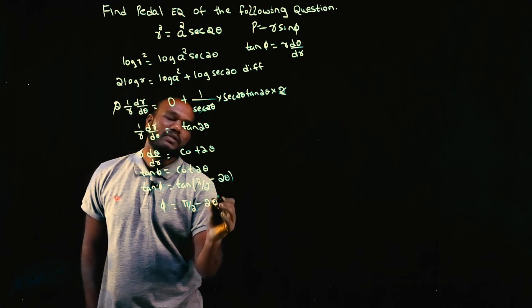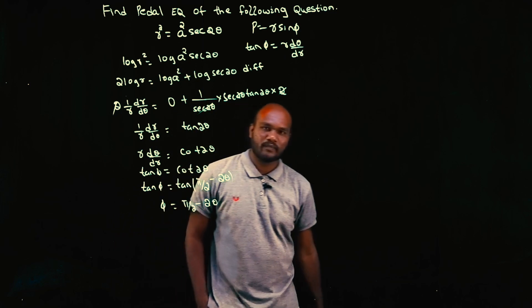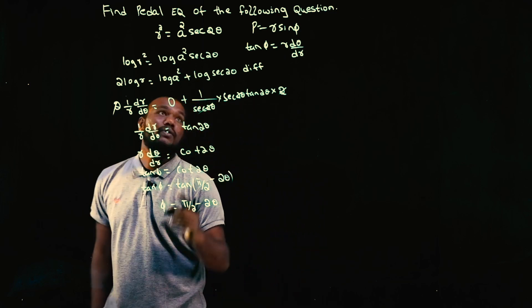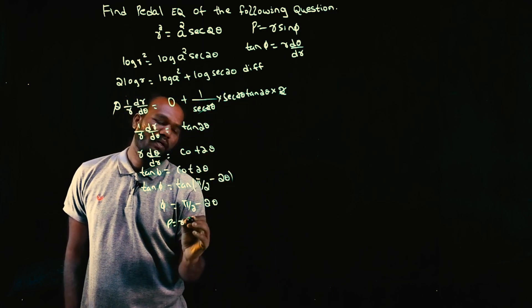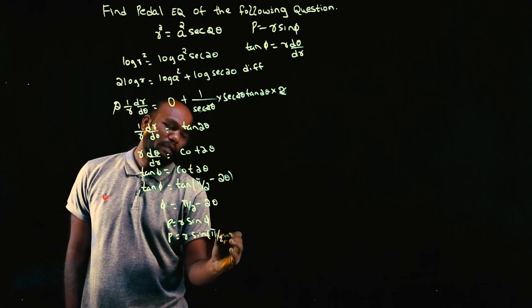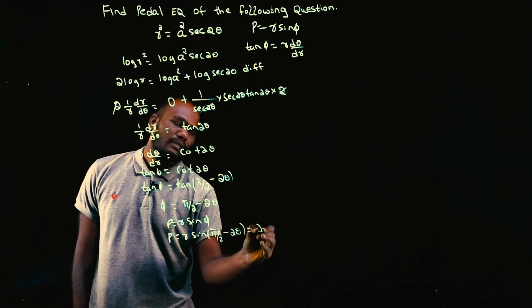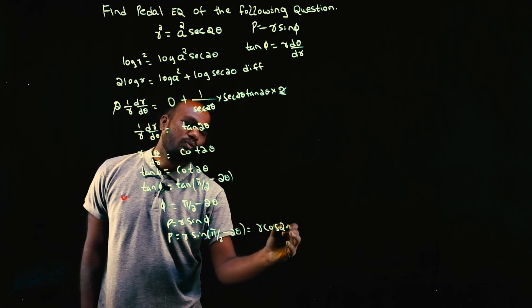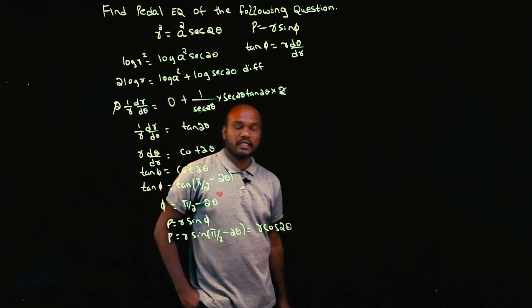Now p = r sin φ. We know φ, so p = r sin(π/2 - 2θ) = r cos 2θ. The pedal equation shouldn't contain θ, so we have to eliminate theta. How?